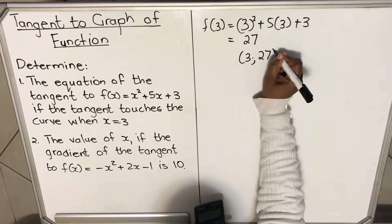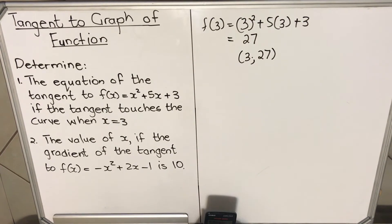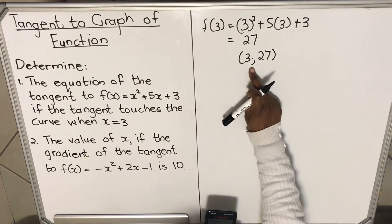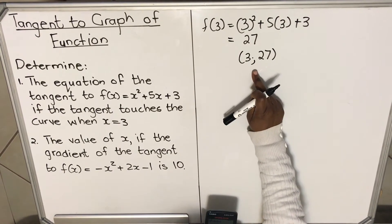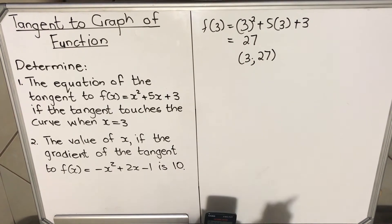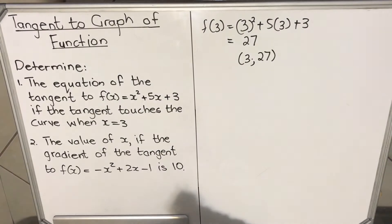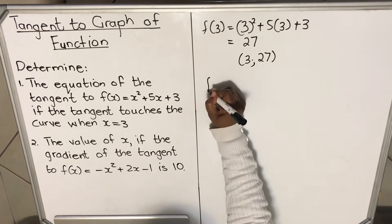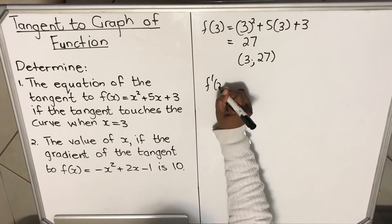This is your first step. Not every question asks you to do this — in some questions they give you the coordinate. If they didn't give you the coordinate, you start by calculating it. The second step is to find the gradient. How do you find the gradient? The gradient is the derivative of f(x).